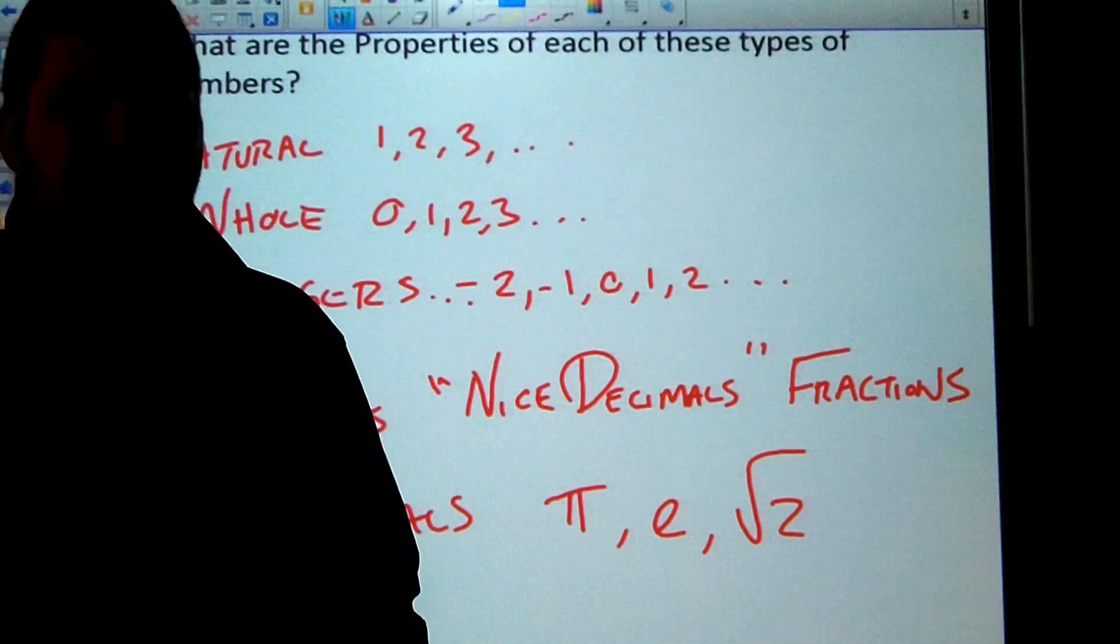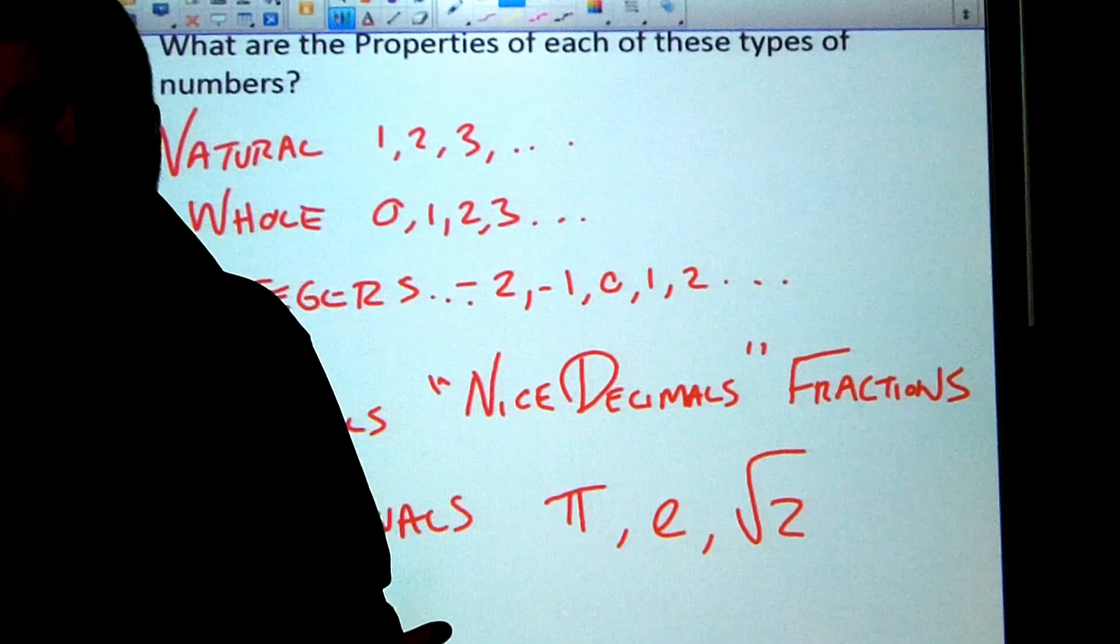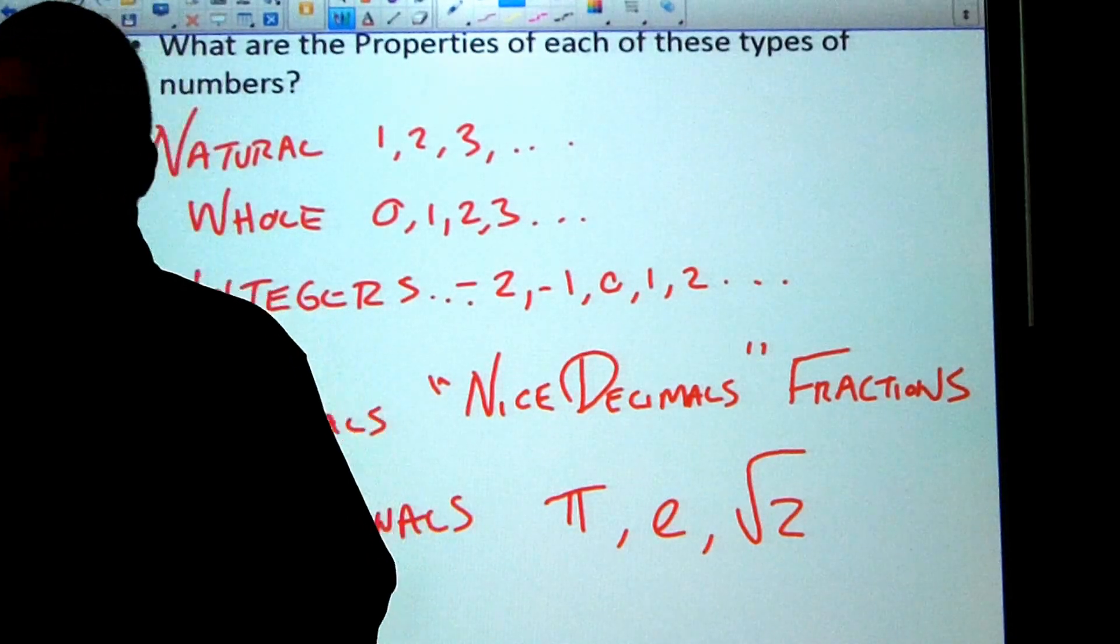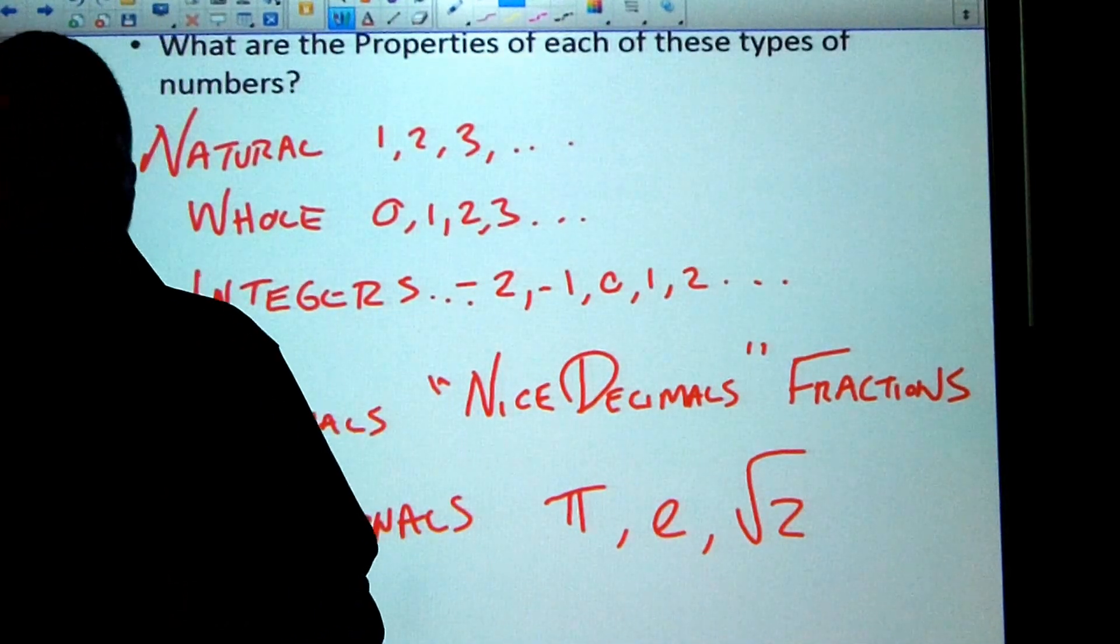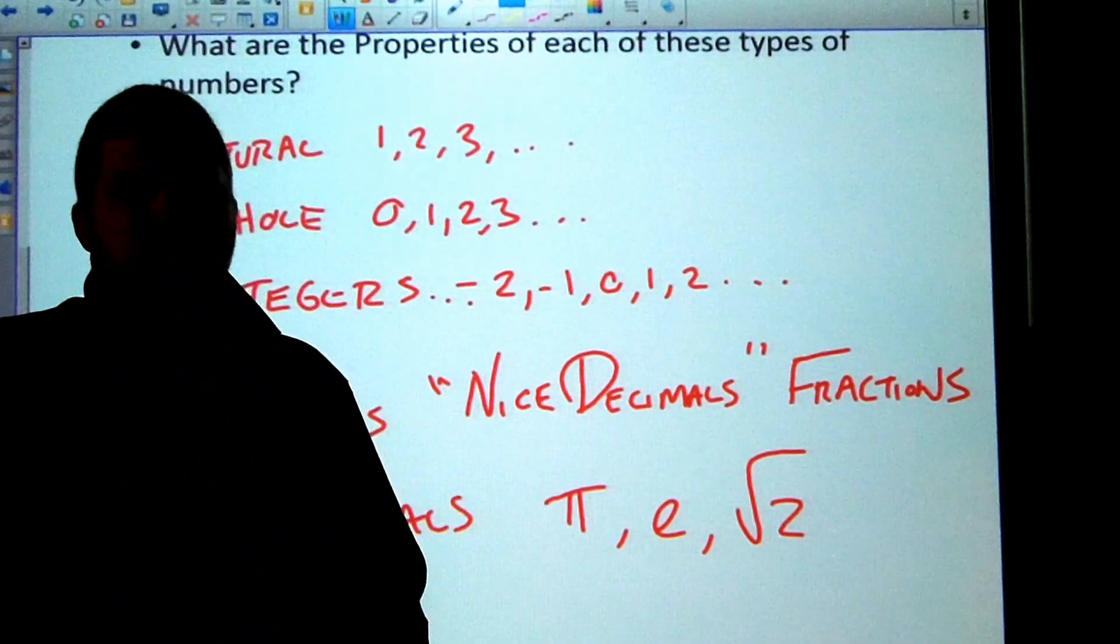Put all those things together and we get what's called the real numbers, and that's typically what we've been using our entire lives. Now later in the course we'll add a new number set called the complex numbers. But for now, we're still just sticking with the real numbers.